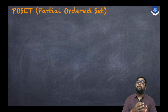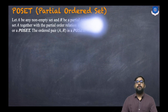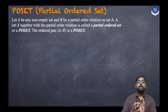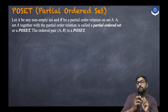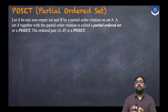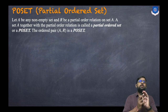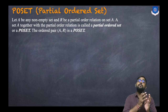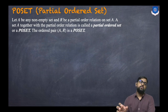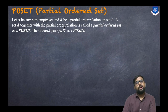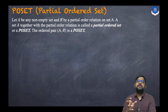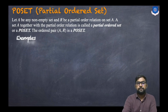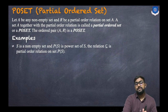Now let us discuss an important topic: what is a POSET, meaning a partially ordered set. Let capital A be any non-empty set and R be a partial order relation on A. Then the set A together with the partial order relation R is called a partially ordered set, or in short a POSET. The ordered pair (A, R) is a POSET.